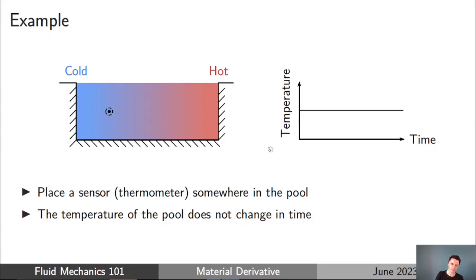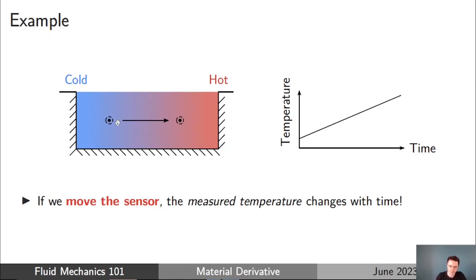Now, what happens if we move the sensor? This is the key idea. If we take that sensor, which is initially at the cold end of the pool, and move it through the water to the hot end, we will of course see that the measured temperature increases with time — because we're moving from the cold end all the way through to the hot end. Even though the pool temperature is staying constant in time, because we're moving the sensor, the measured temperature does change with time.